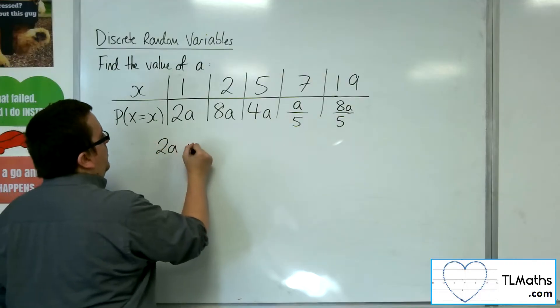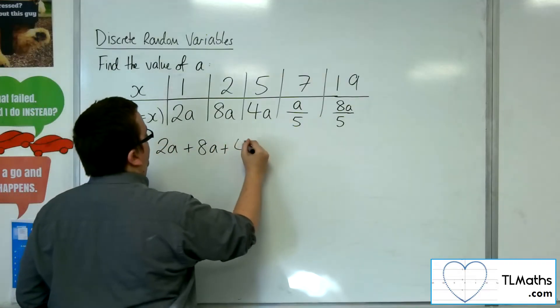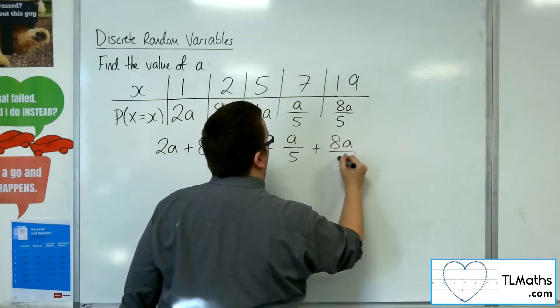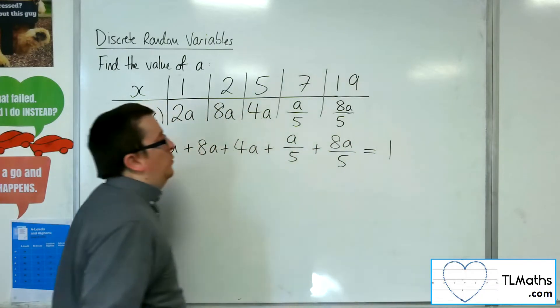So 2a plus 8a plus 4a plus a over 5 plus 8a over 5 is got to be equal to 1.